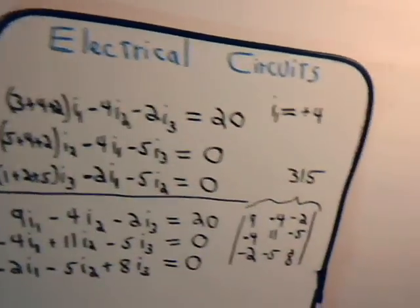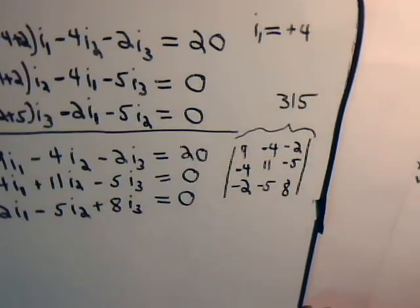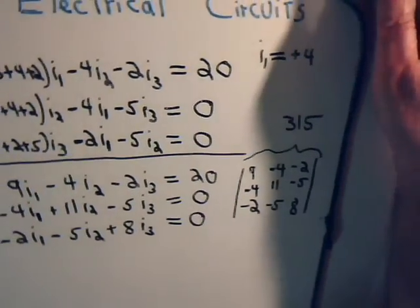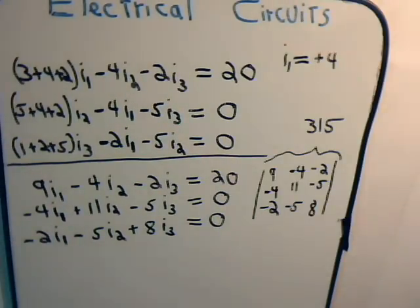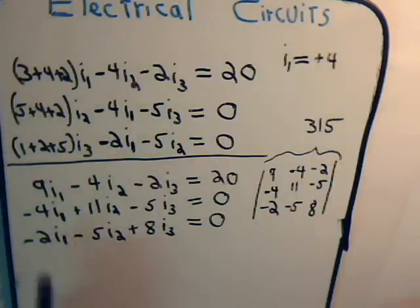So let's go back to where we left off, which was right here. These are the three mesh currents that we obtained, which we rewrote like this.